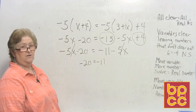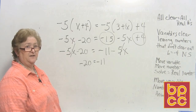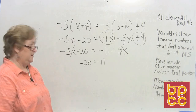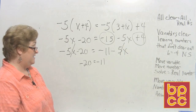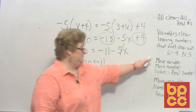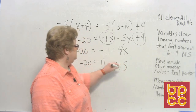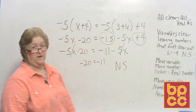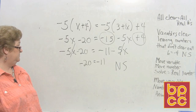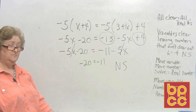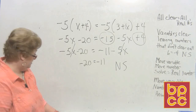The x's clear out and we're left with −20 = −11. The coaches walked off — we've got two uneven teams with no one to direct them. These numbers don't clear out, so we have no solution. There is no real number that can fit into this equation to make it work. No solution.